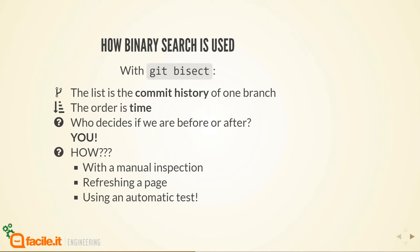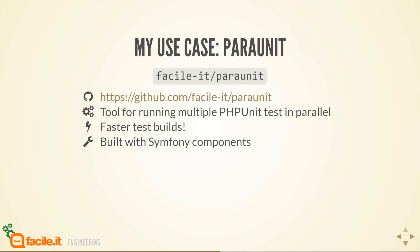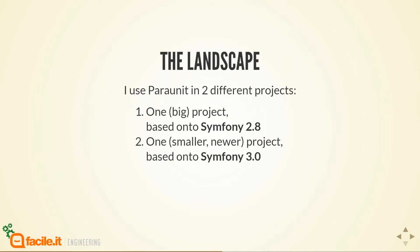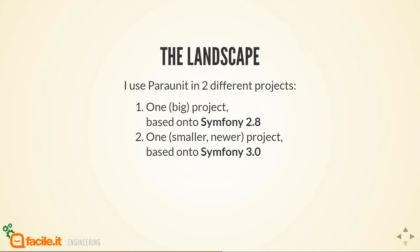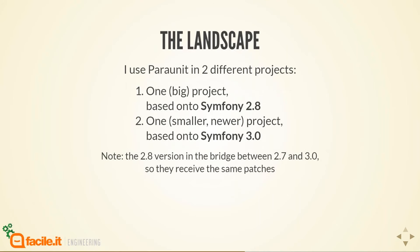Let's see how this came useful in my use case. At Facile, I am the main maintainer for an open-source project called ParaUnit. It's basically a tool that helps you run multiple PHPUnit tests to have faster test builds. I built it with Symfony components, and I use it in two different projects: one big project based on Symfony 2.8 and one smaller, newer project based on Symfony 3.0. The 2.8 version is essentially the same as 3.0 — it's a bridge between 2 and 3.0 with the same code base, just with all the deprecated calls added. So they both receive the same patches.